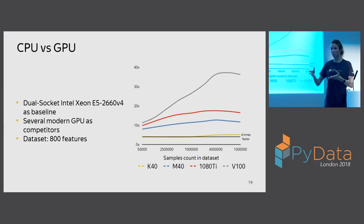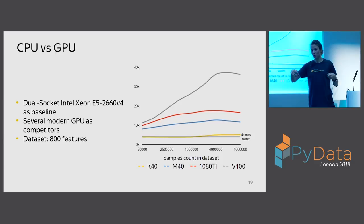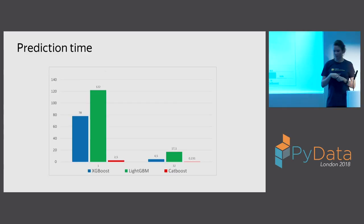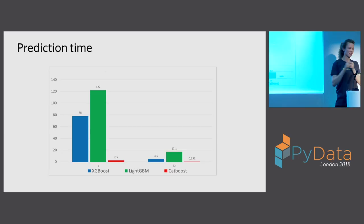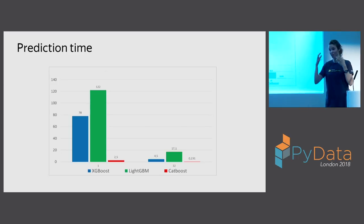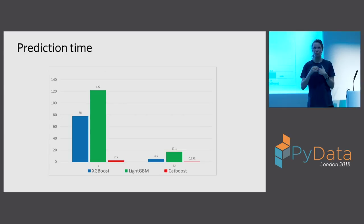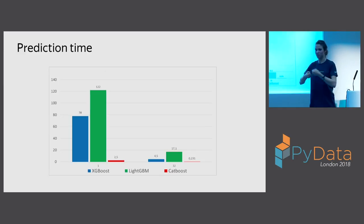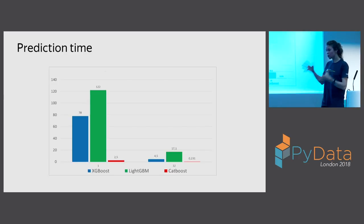Now about prediction speed. CatBoost has symmetric trees which enable a very efficient applier implementation. The CatBoost applier is 30 to 60 times faster than other libraries. At Yandex, we really need a fast applier because we have time-critical applications like ads and search. So if you have a time-critical application, this is very useful.